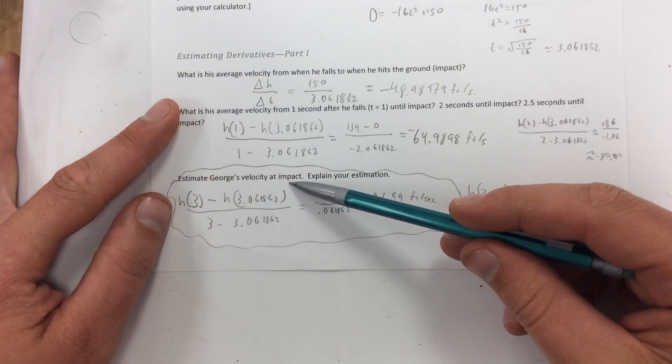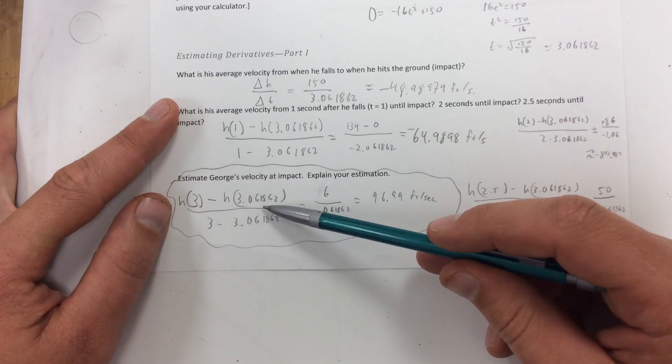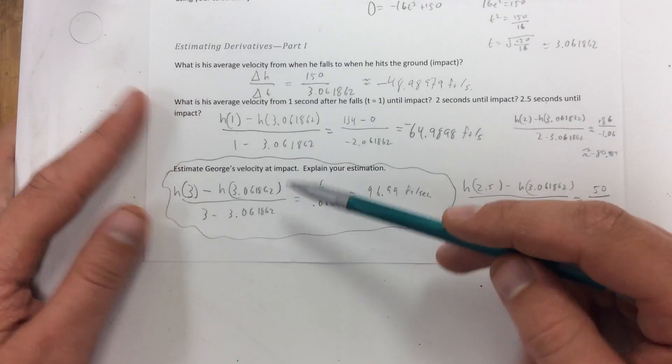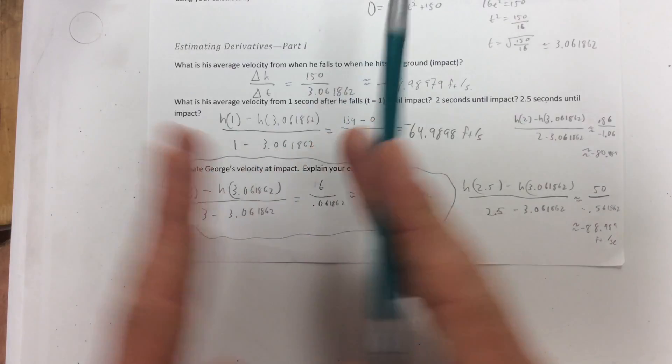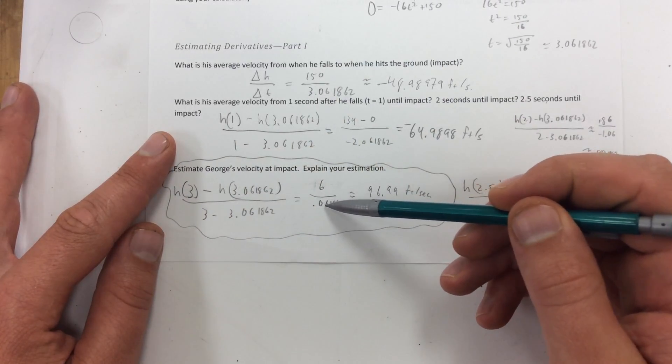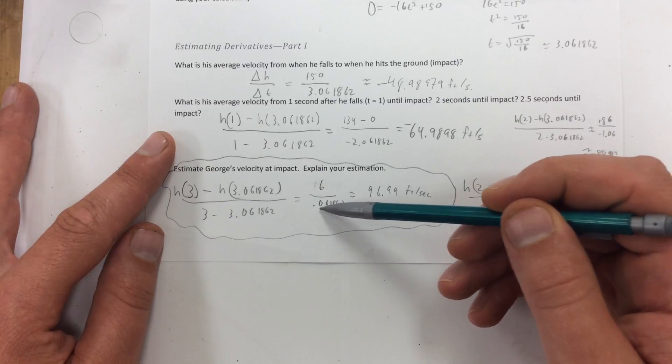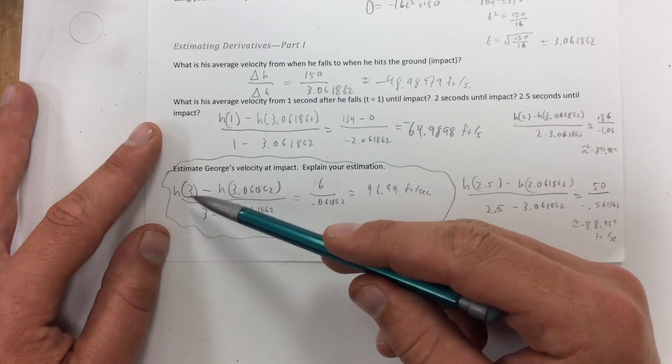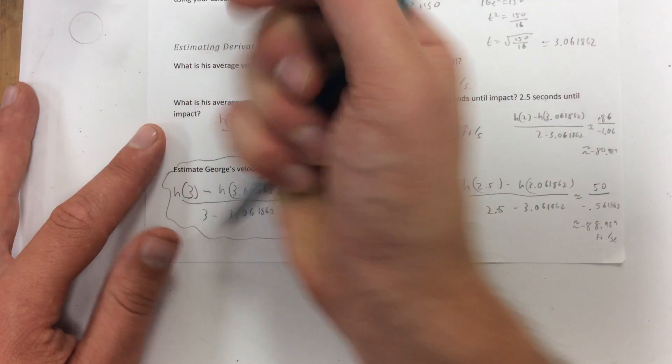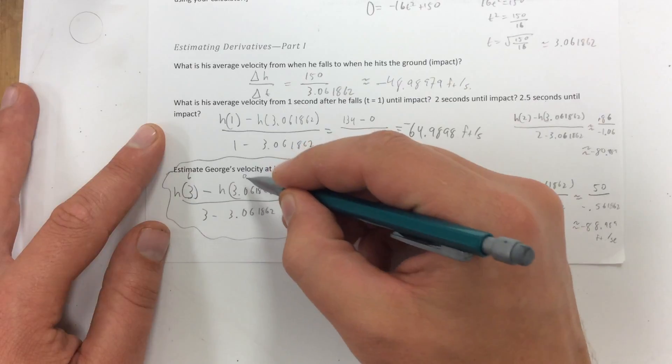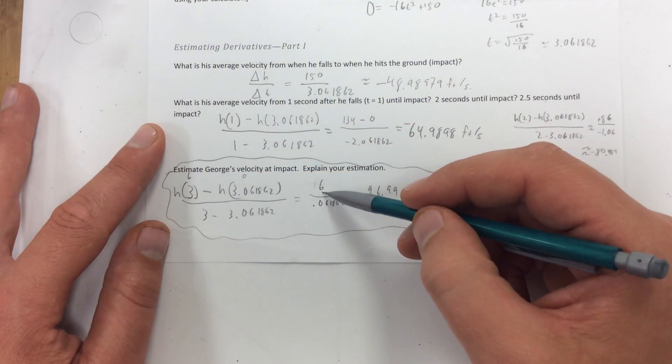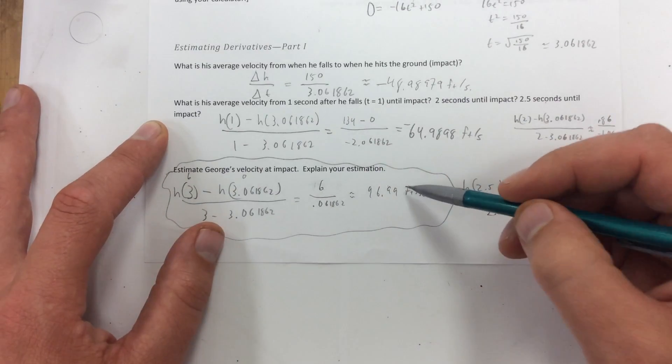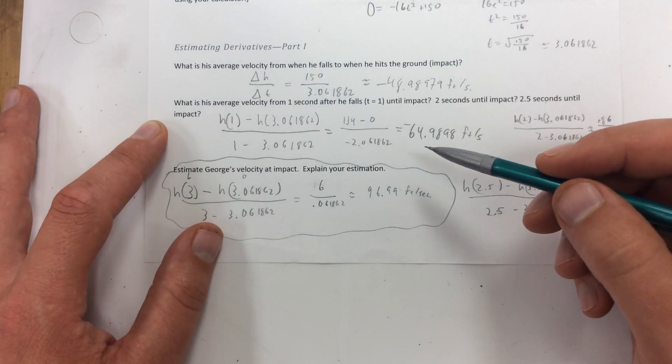If I'm going to estimate his velocity of impact, what I did is, I took the average velocity, but I made it over a really, really tiny time interval. Okay, so 0.06 seconds. So in those 0.06 seconds, that change in time, his change in height was 6 feet. Right there, he was 6 feet above the ground. When he hits, he is 0 feet above the ground. So he falls 6 feet in 0.061862 seconds. That means he's going about 97 feet per second.